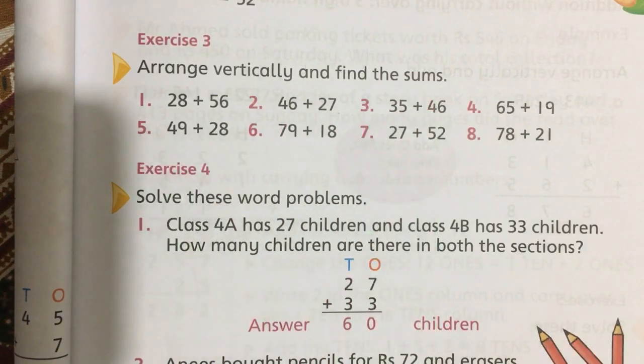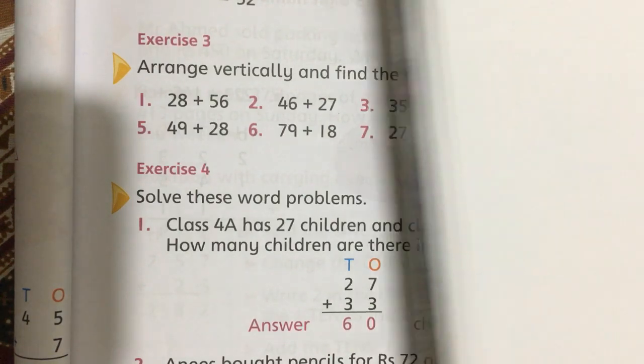You have to arrange them vertically and then find out the sums of numbers. First is 28 plus 56. So you have to write here 28 plus 56.